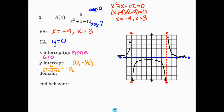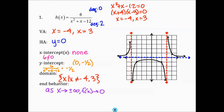Then we need to find the domain. Just like last class, the domain excludes where the denominator equals zero — where the vertical asymptotes are. So the domain is x such that x does not equal negative 4 or 3. We'll skip the range for this problem since it's complicated. For end behavior, both ends approach the horizontal asymptote: as x approaches positive and negative infinity, f of x approaches 0.